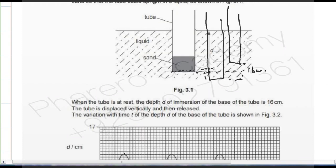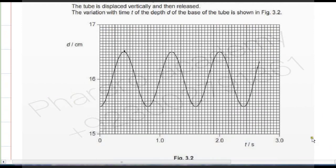Now for the time period. Looking at the time period on the graph, counting from peak to peak: one, two, three, four, five, six, seven, eight, nine, ten, eleven, twelve, thirteen, fourteen, fifteen, sixteen boxes. This is peak to peak — sixteen boxes — and this represents one time period.